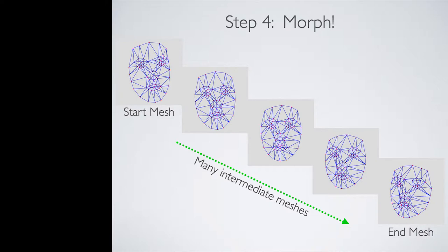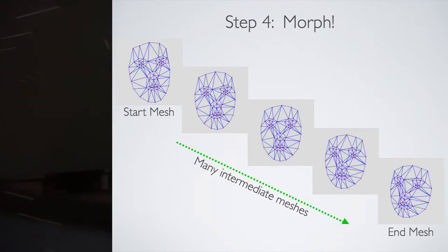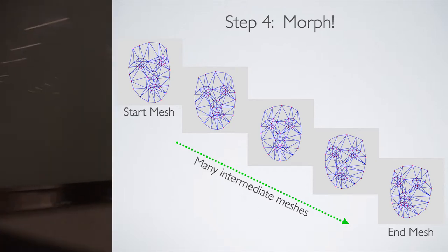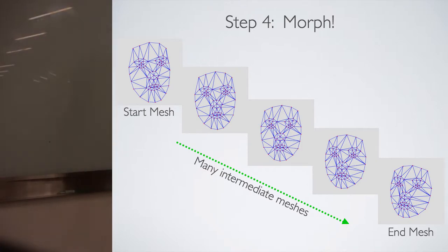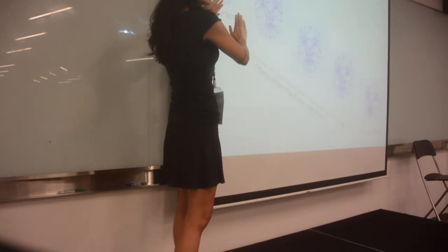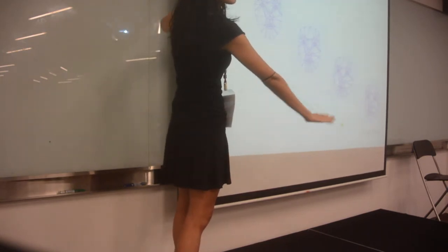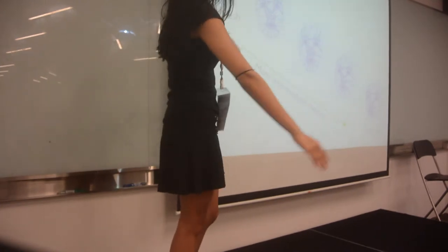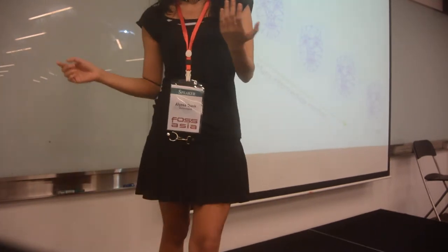Step four is the actual morph. We have our input face mesh — the starting mesh — and our destination, the ending mesh. From one point to another point we have a straight line, so we can locate as many points in between as we want, which means we can create as many intermediate meshes as we want for this transition from start to end mesh. The morphing sequence is: walk from image number one to the next consecutive image, all the way through to the end image, giving you a nice morphing sequence.